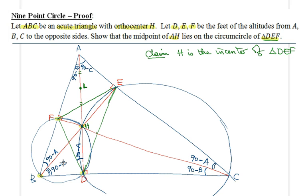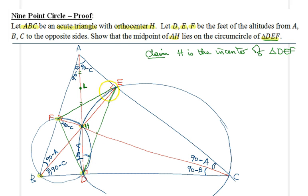Now, this 90-minus-C angle subtends arc HD, but that arc is also subtended by another angle measuring 90 minus C. Similarly, angle HDE subtends arc HE, which is also subtended by the 90-minus-A angle. And we already found that angle FDH is also 90 minus A — you can just see it there.